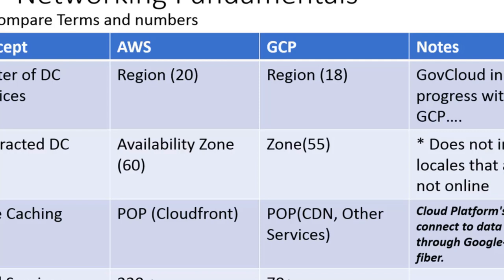When it comes to clusters of data center services, GCP has 18 at the time of writing, but there are over 55 abstracted data centers now, plus edge caching. Google's POP CDN services connect the data centers through Google-owned fiber. We'll also talk about how you can take advantage of Cloud Interconnect to directly connect from on-premises to one of Google's supported edge locations.